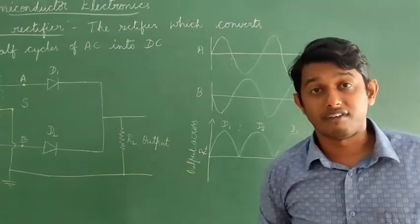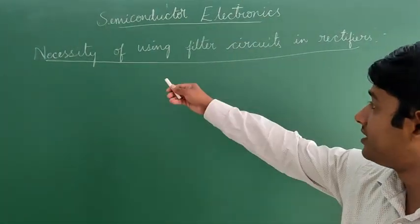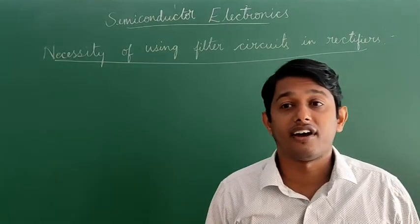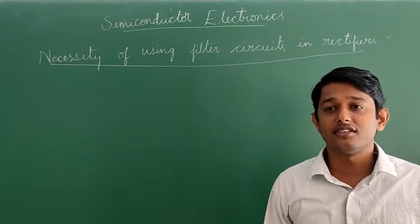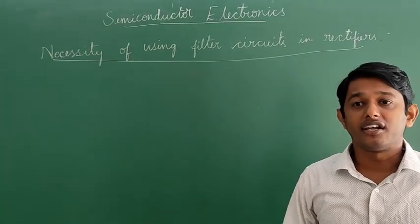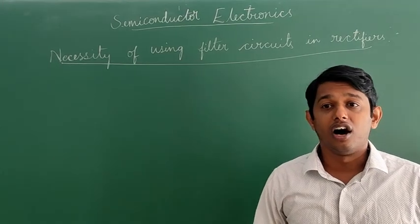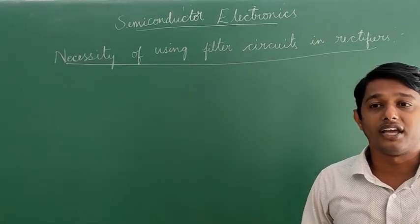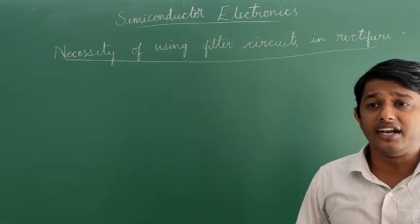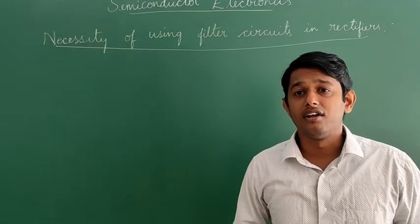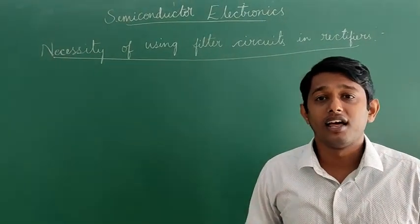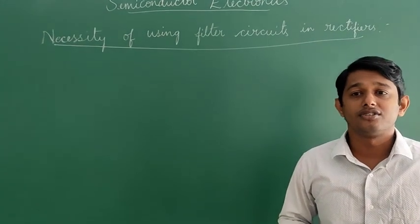The next topic is the necessity of using filter circuits in rectifiers. The rectified voltage is in the form of pulses. Though it is unidirectional, it does not have a steady value. To get a steady DC output from the pulsating voltage, a capacitor is connected across the output terminals, or an inductor in series with load resistance RL. These circuits filter out the AC ripple and give pure DC voltage, so they are called filters.